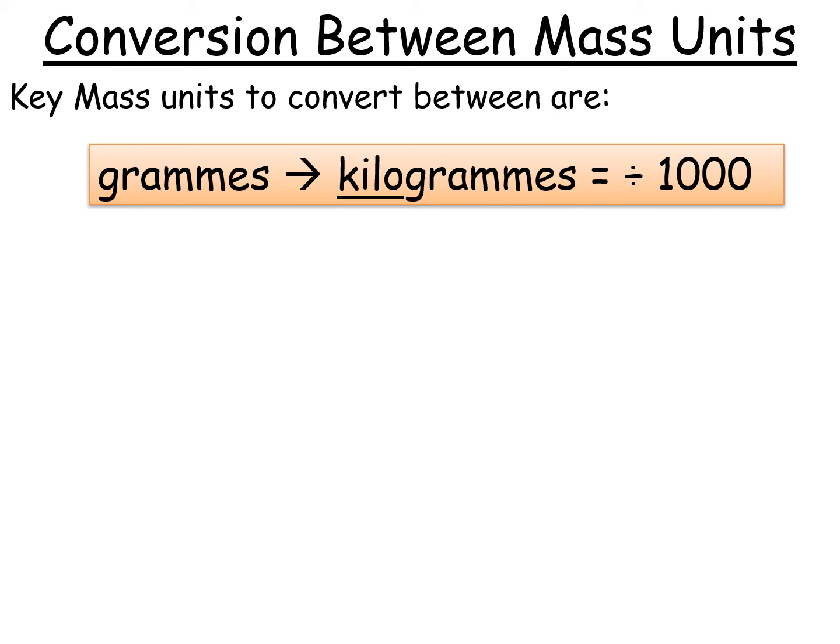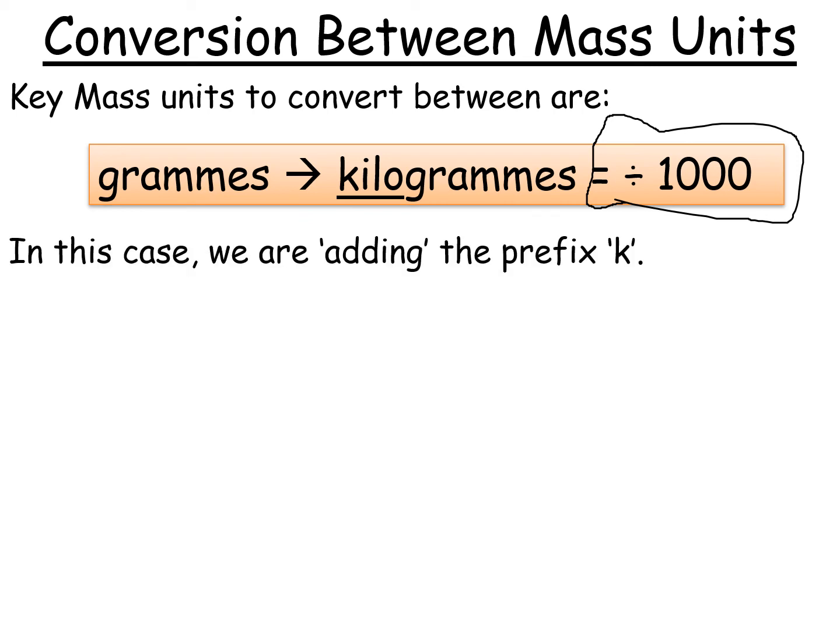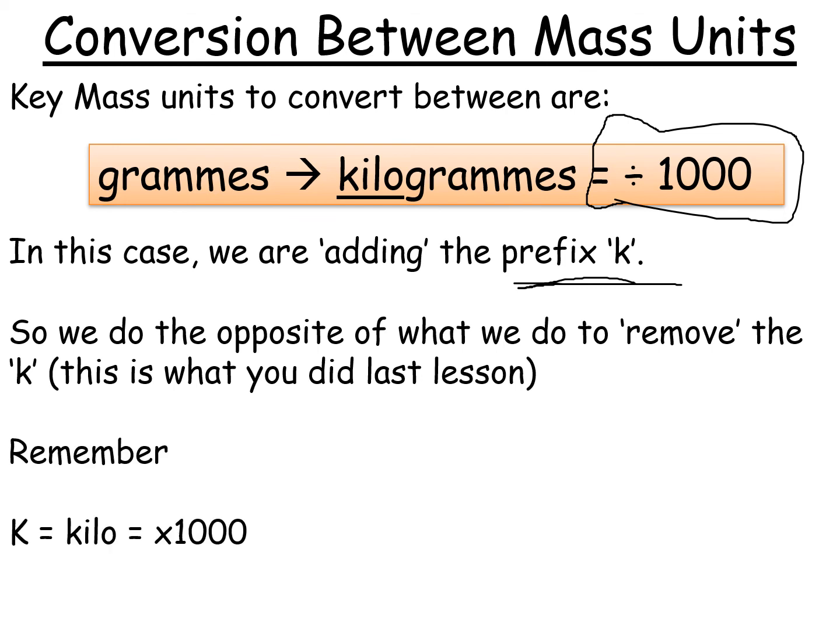Now moving on to the final one for today's lesson, and there's also one more slide after this, is converting grams into kilograms. And you simply divide by 1,000. Now, this one is one that people always get mixed up. People always think you have to multiply by 1,000 to get to kilograms. Well, let's look at why that isn't right, folks. So in this case, we are adding the prefix K. We're not getting rid of it. We're actually adding it back in. So if you think back to before to get rid of the K, what did you do? You had to multiply by 1,000. So remember that K stands for kilo, and that's the same as 1,000 or times by 1,000. So if you want to add it back in, you've got to do the opposite, which means you divide by 1,000.